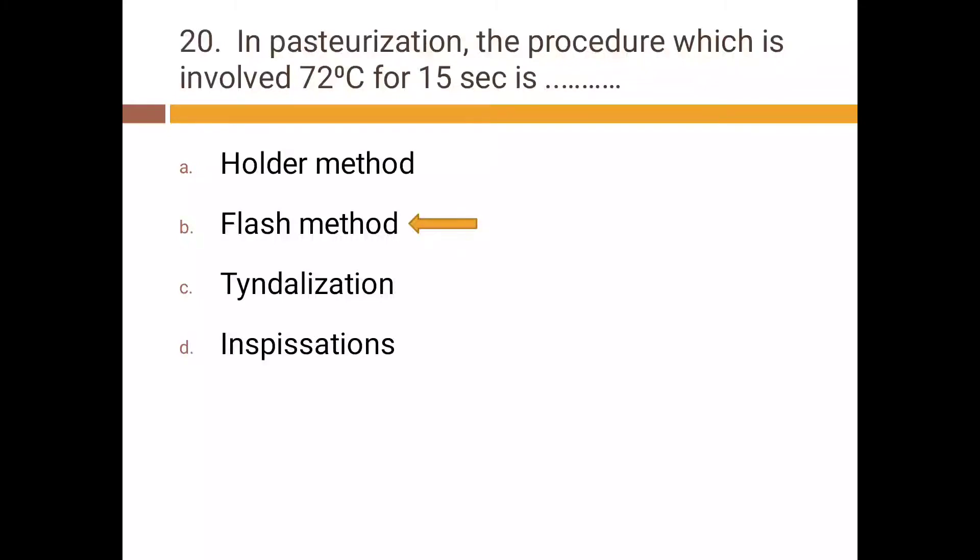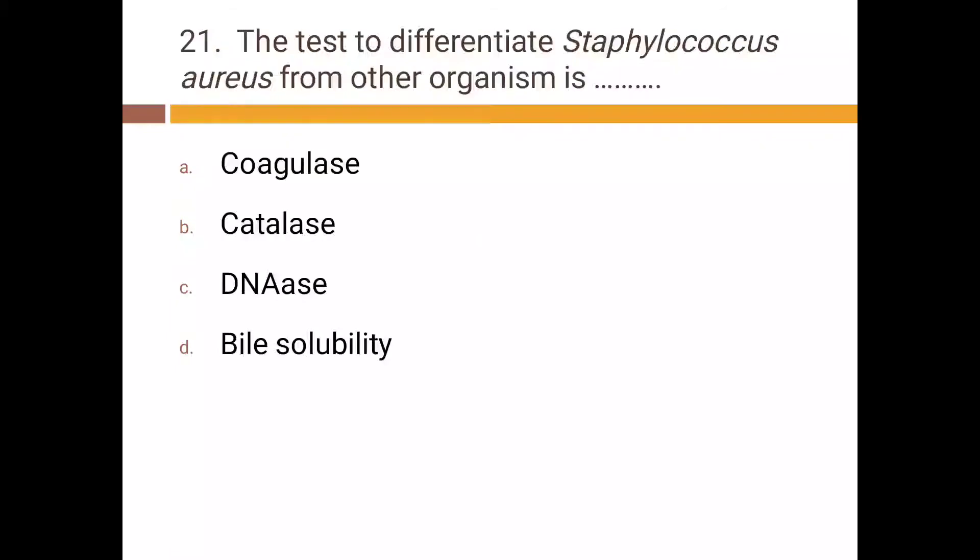The test to differentiate Staphylococcus aureus from other organisms is: a) coagulase, b) catalase, c) DNase, d) bile solubility. Correct answer is a) coagulase.